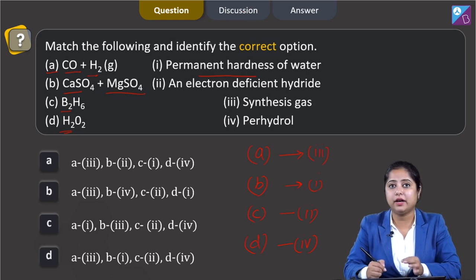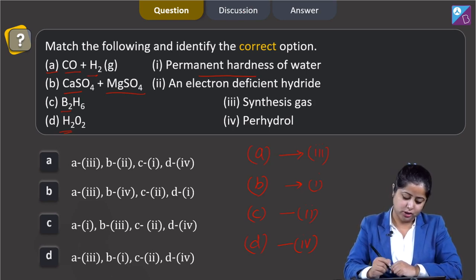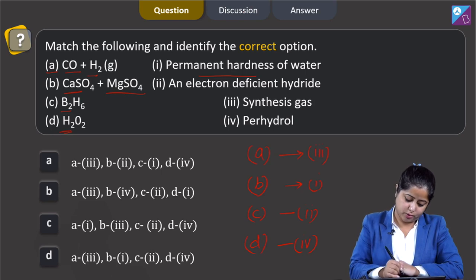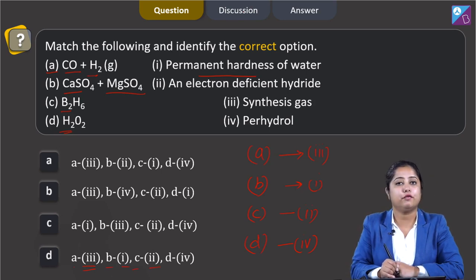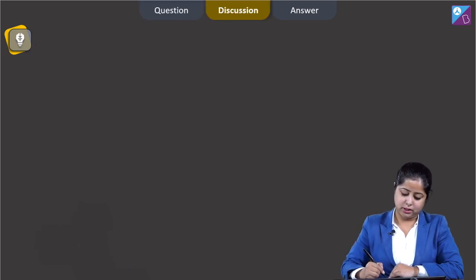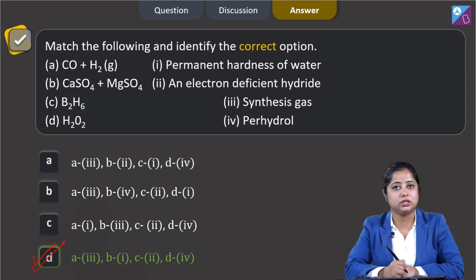Now we have to identify the correct option for this question, which is option number D. A has third option, B has first option, C has second option, and D has fourth option. The correct answer is option D.